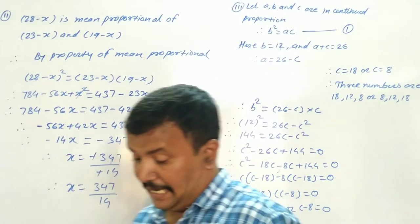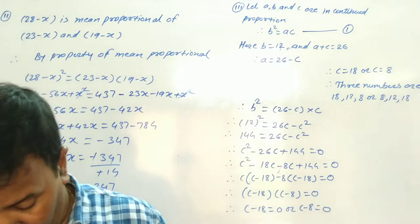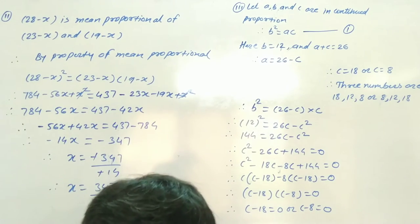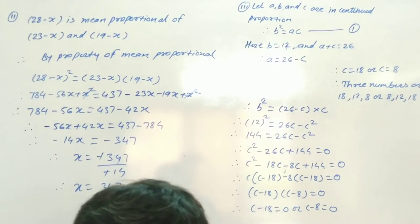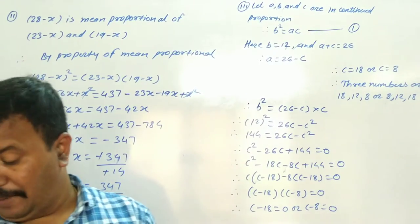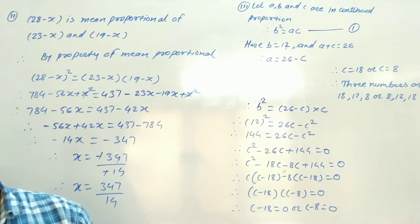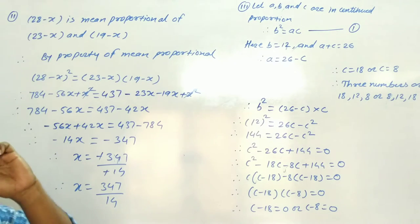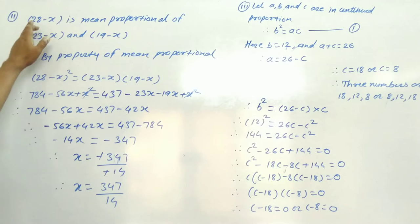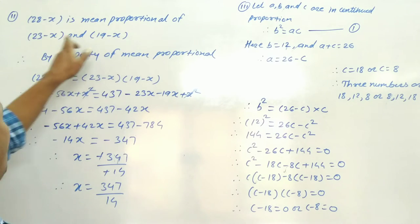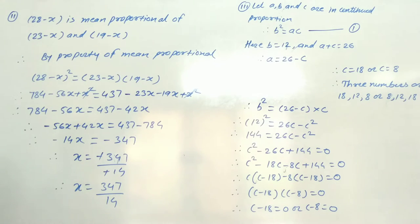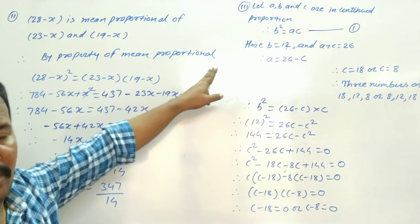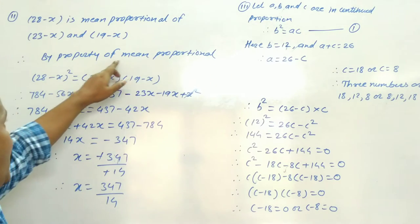Second question: if 28 minus x is the mean proportional of 23 minus x and 19 minus x, then find x by the property of mean proportional.